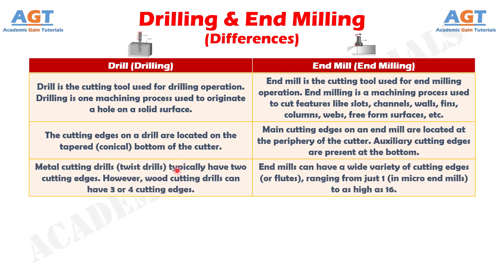Number three: metal cutting drills, or twist drills, typically have two cutting edges. However, wood cutting drills can have three or four cutting edges, whereas end mills can have a wide variety of cutting edges, or flutes, ranging from just one, in micro end mills, to as high as 16.